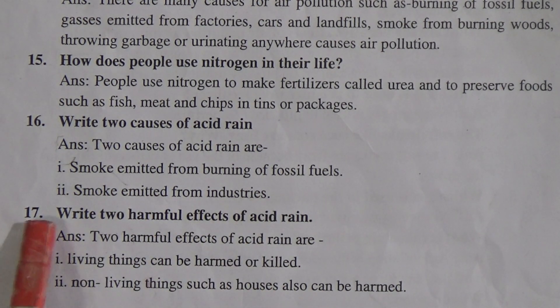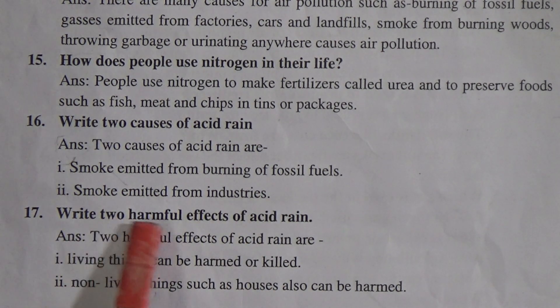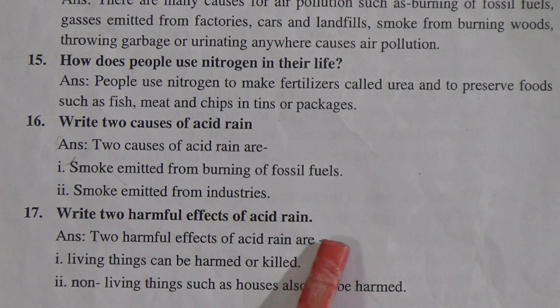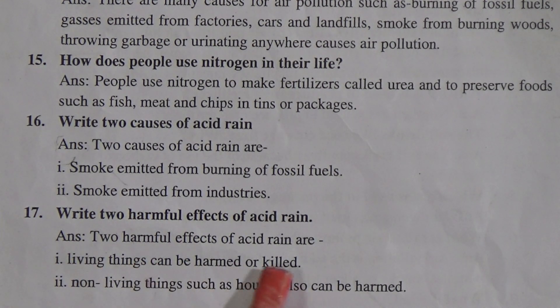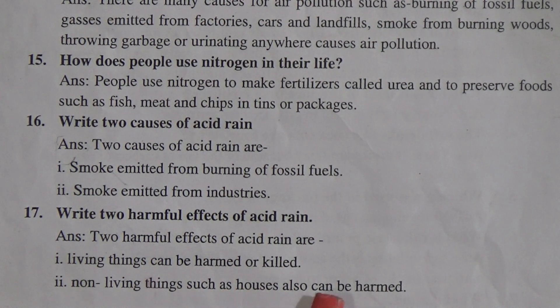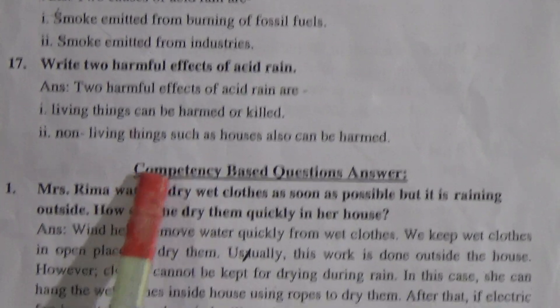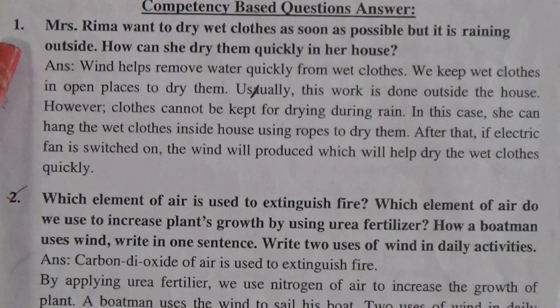Question number 17: Write two harmful effects of acid rain. The answer is: two harmful effects of acid rain are, first, living things can be harmed or killed, and second, non-living things such as houses can also be harmed. Now we are going to move to the competency-based question answers, and today we will discuss two competency-based questions.